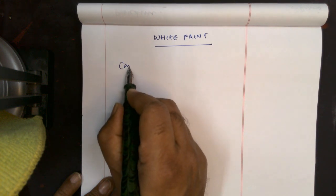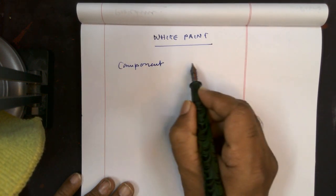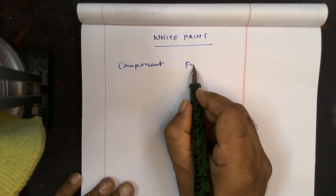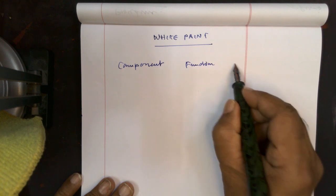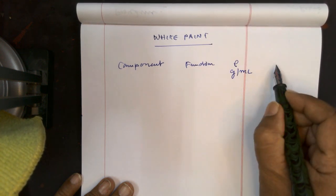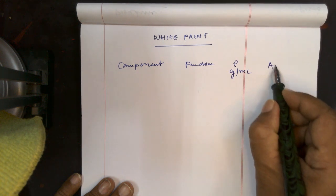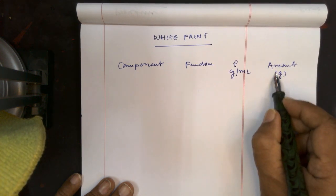Component - let me explain the function of each component, then its density in gram per ml, and then the amount present in gram as weight.